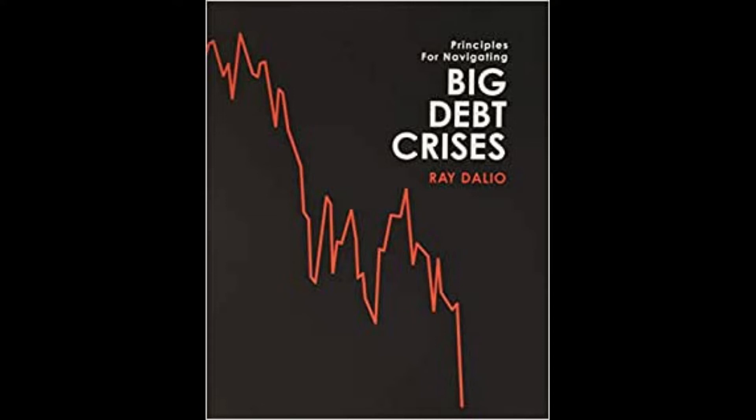Central banks can only produce the type of money and credit that they control — for example, the Fed makes dollar-denominated money and credit, the BOJ makes Japanese yen money and credit. Through a symbiotic relationship, over time central banks and free market borrowers and lenders typically create bigger and bigger piles of debt assets and liabilities. The bigger the pile, the greater the challenge for central bankers to balance the opposing pressures so the pile doesn't topple over into a deflationary depression in one direction or an inflationary depression in the other.